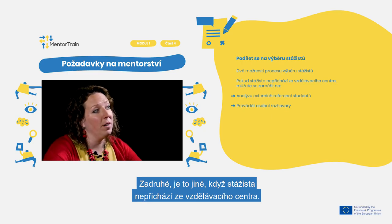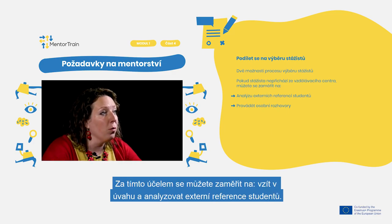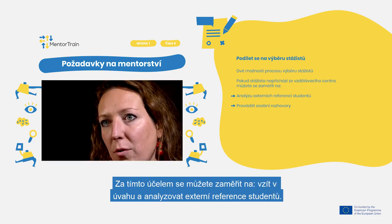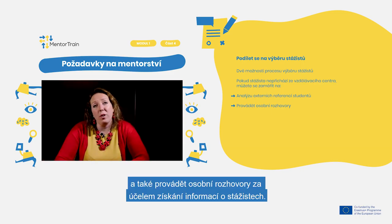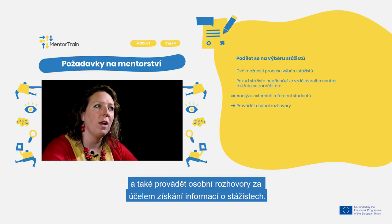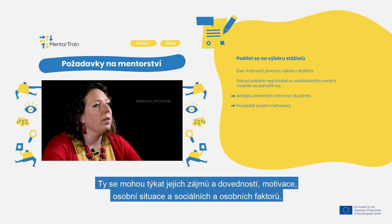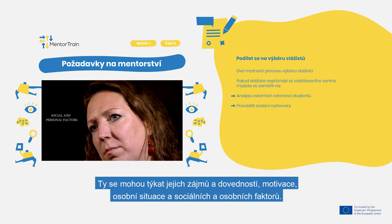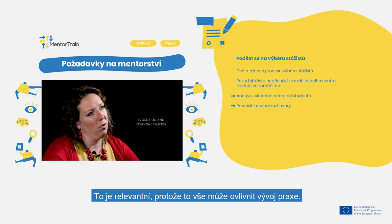Secondly, it is different when the apprentice does not come from an educational center. There it is important for your company to be able to see the apprentices from a wider perspective. To do so, you can focus on taking into account and analyzing external references of the students, and also conduct personal interviews to get information about the apprentices. These can be in relation to their interests and skills, motivation, personal situation, and social and personal factors. This is relevant as all of this may affect the evolution of the training process.